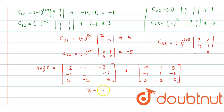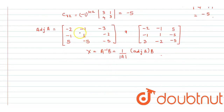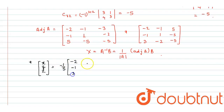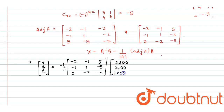Now x equals to A inverse B, which equals 1 over mod of A, times adjoint A, times B. We will put the values and solve it to get the value of x, y and z. So x, y and z equals to minus 1 upon 5 times the adjoint matrix, multiplied by the prize money column vector 2200, 3100 and 1200.